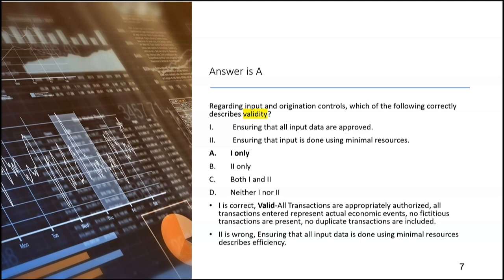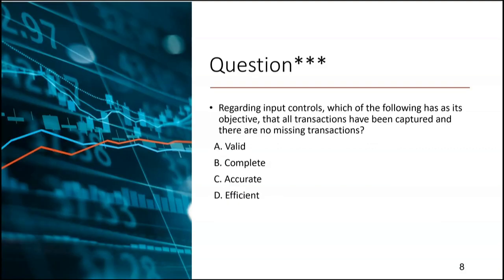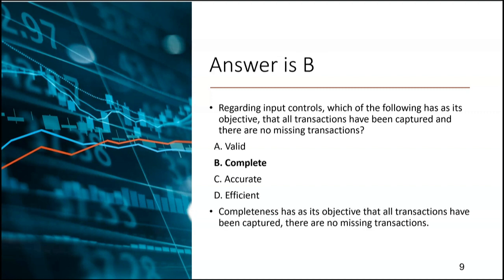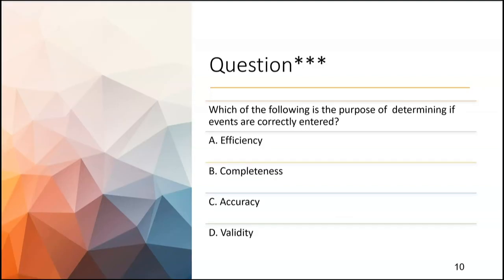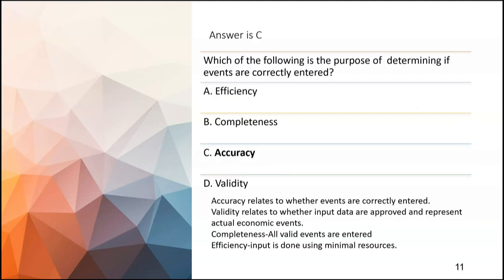Regarding input controls, which has as its objective that all transactions have been captured and there are no missing transactions? The answer is completeness — if there are missing transactions, the data is not complete. And which of the following is the purpose of determining if events are correctly entered? That would be accuracy. Accuracy relates to whether events are correctly entered; validity relates to whether input data are approved and represent actual economic events. Accuracy assumes that if it's a real, valid event, it needs to be recorded correctly.